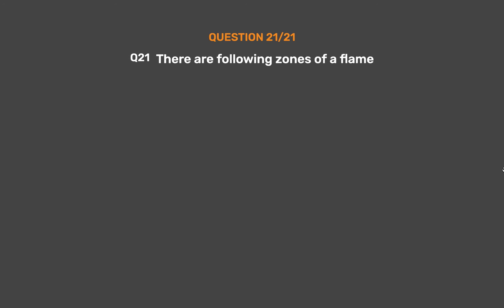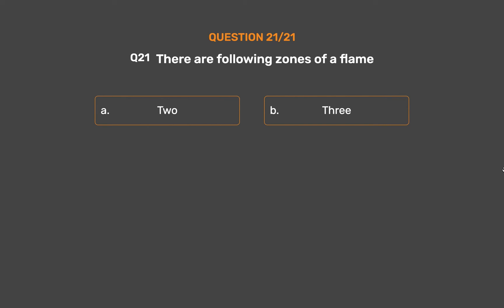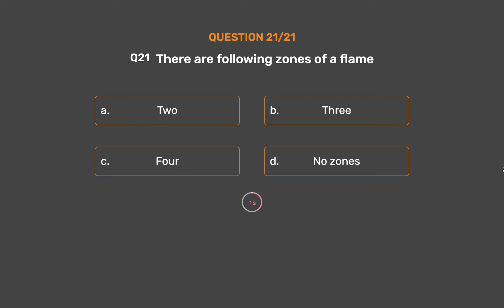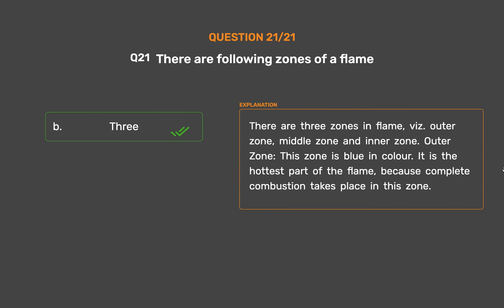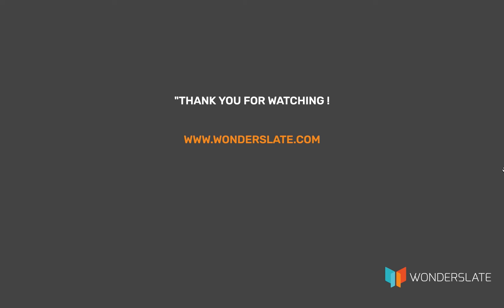Question number 21: There are how many following zones of a flame? Option A: 2. Option B: 3. Option C: 4. Option D: No zones. The correct answer is Option B: 3. There are three zones in a flame — outer zone, middle zone, and inner zone. The outer zone is blue in color and is the hottest part of the flame because complete combustion takes place in this zone.